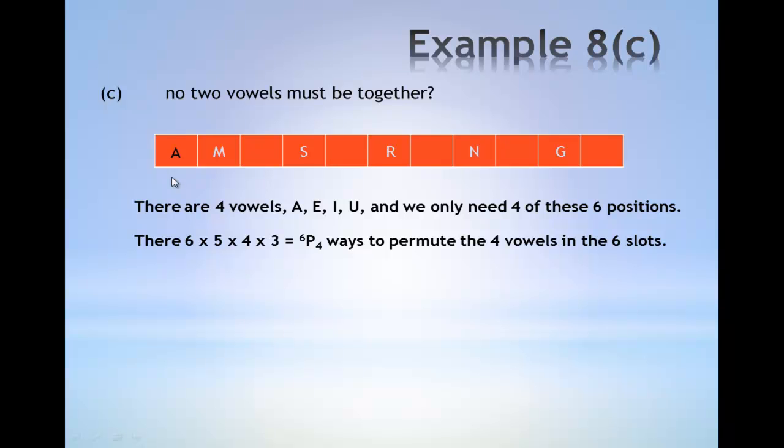For example, A can be in any one of these six positions. E can be in any of the remaining five positions. I must be holding one of the four remaining positions. U in one of the last three positions. Therefore, it gives us six times five times four times three.